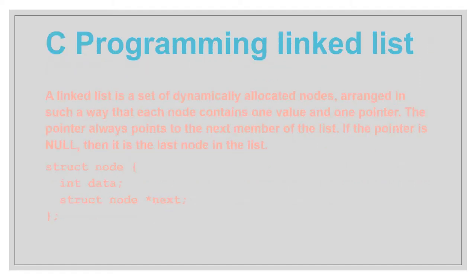In programming, a linked list is a set of dynamically allocated nodes arranged such that each node contains one value and one pointer, and the pointer always points to the next member of the list. If the pointer is null, then it is the last node in the list. Here is the code you can see on screen.